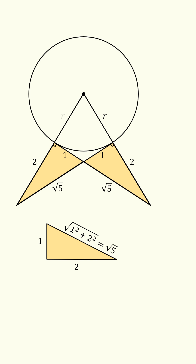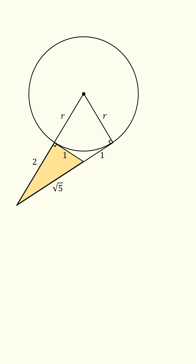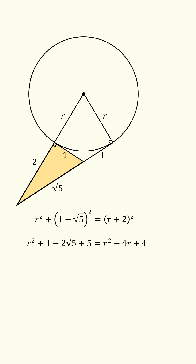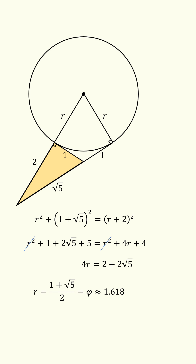Now let r be the radius of the circle. We can now focus on this right triangle, and we must have that r squared plus the square of (1 + √5) is equal to the square of (r + 2). We can expand each binomial and then cancel out the r squared terms to get that 4r is equal to 2 plus 2√5. This means r is equal to (1 + √5) / 2, which is equal to the golden ratio, which is approximately 1.618.